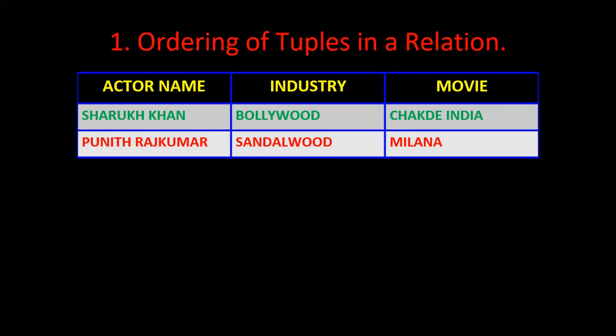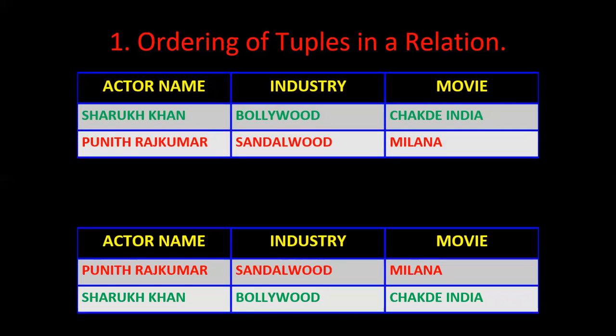The second tuple gives details about actor Puneet Rajkumar who works for Sandalwood and acted in the movie Milana. Now we need to check: if I change the order of the tuples, how will it affect the relation? Will it change the meaning of the relation or affect the value of the tuples? So now I will change the order of the tuples.